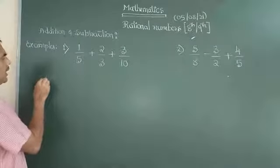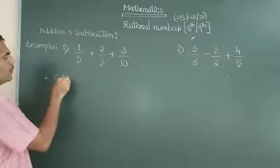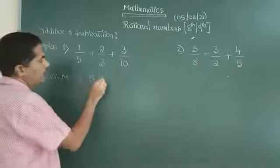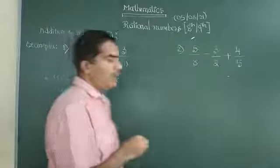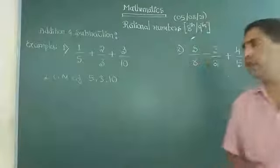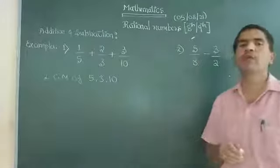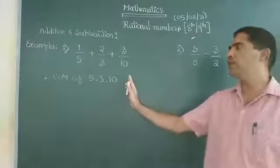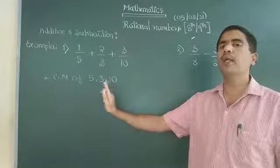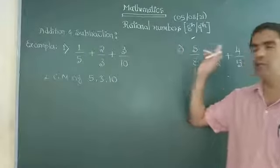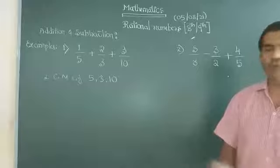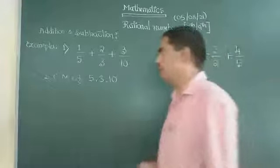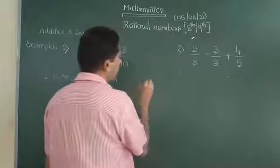I am trying to find LCM of 5, 3 and 10. See, remember, finding the LCM also, you must have learned in earlier classes. But the problem, after one year gap, you need to relearn. That is why I am teaching again. How to find the LCM of 5, 3 and 10? Write 5, 3 and 10.